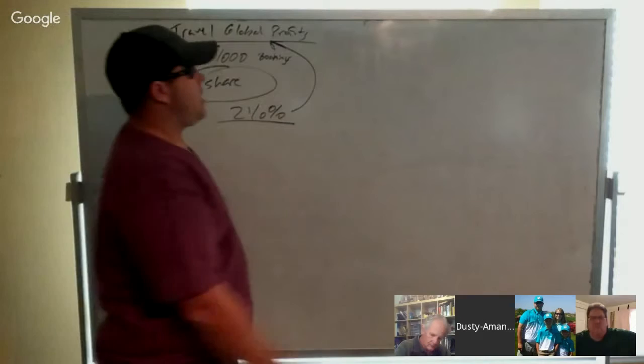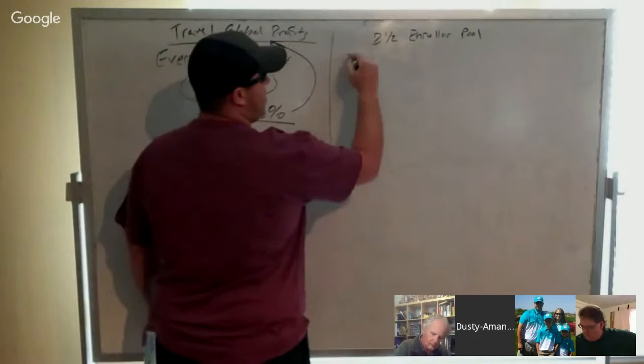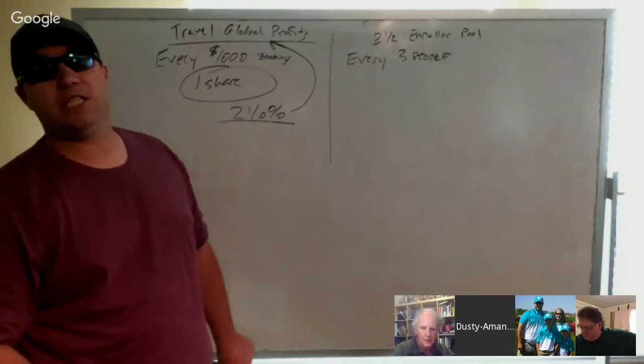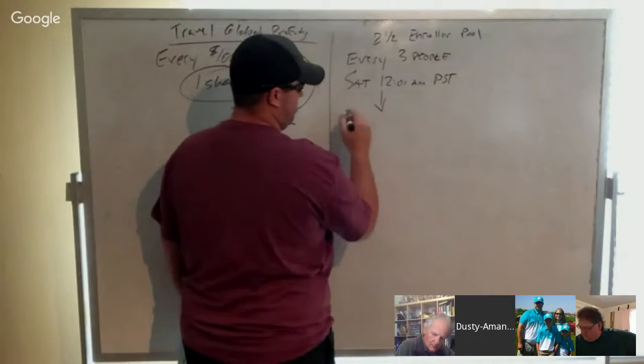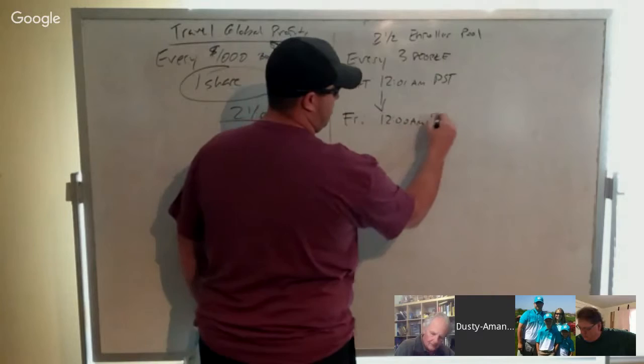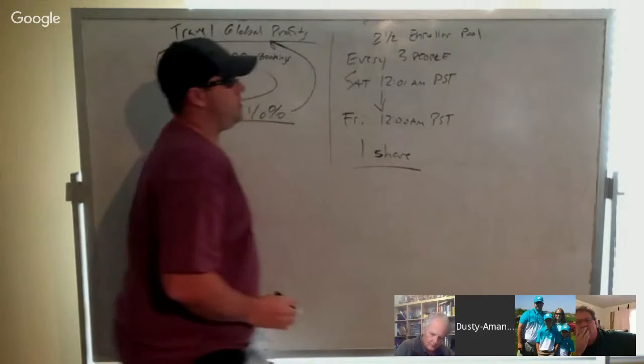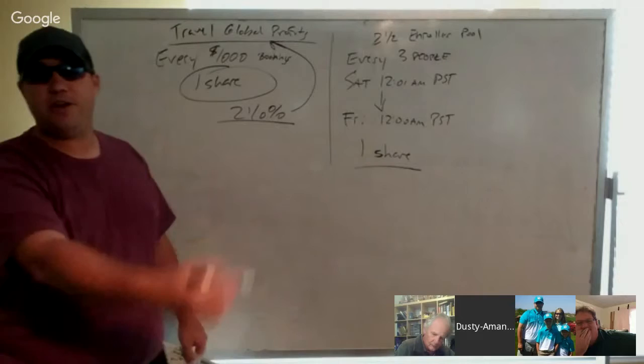Then we have a two and a half percent enroller pool for the builders. So every three people in a pay week. And our pay week runs from Saturday morning at 12:01 a.m. Pacific time. And it goes to Friday at midnight Pacific time. So any new three agents that you personally enroll gets you a share in our enroller pool. If you enroll six, you get two shares. If you enroll 30, you get 10 shares. So for every three people, or every three new agents that come in, you get a piece of that pool.